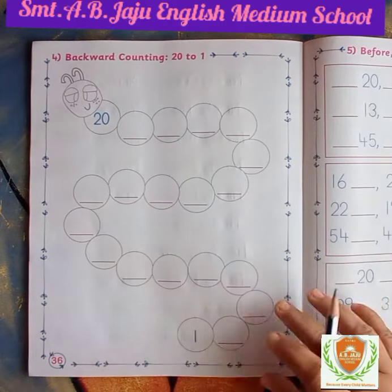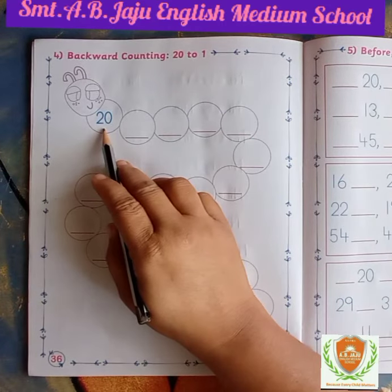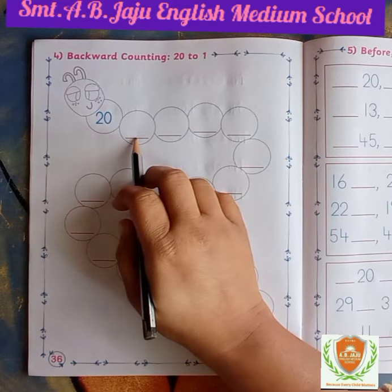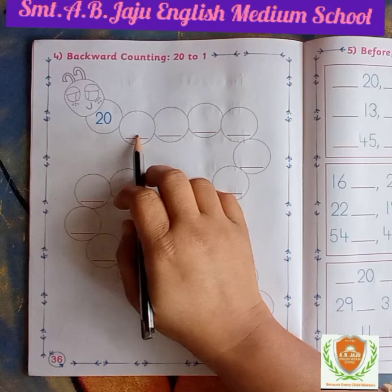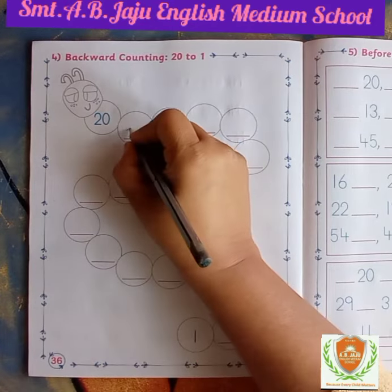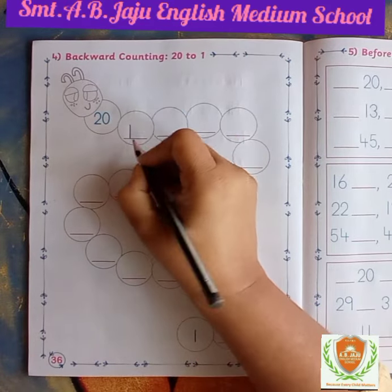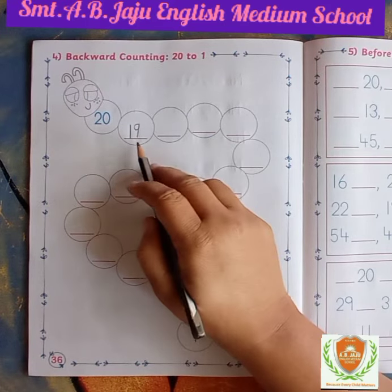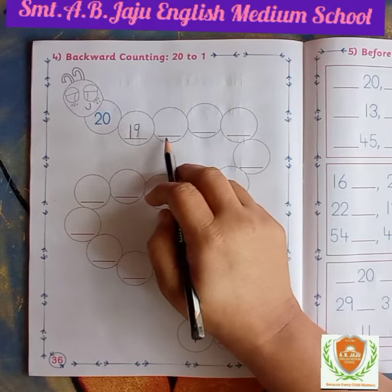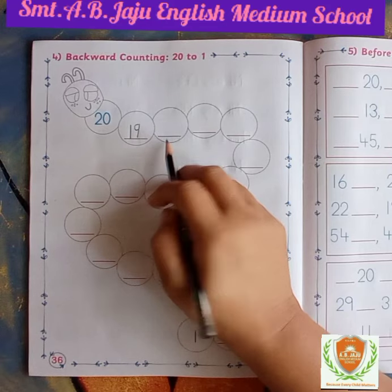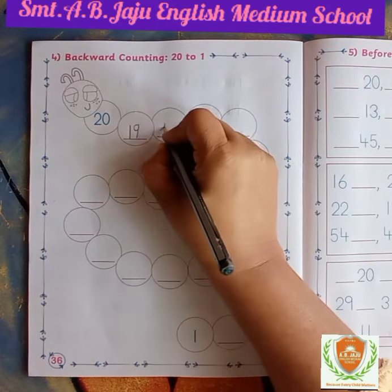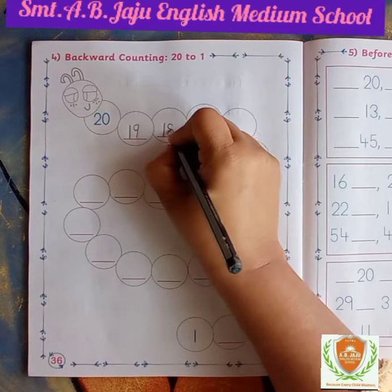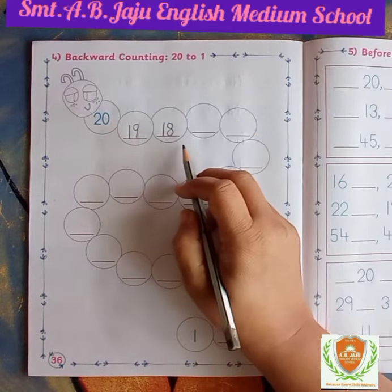Okay students, this is the number 20. In backward, after 20, which number comes? 19. Write down first 1, then write down 9 — that is 19. Now next, after 19 which number will become in backward? 18. Write down first 1, then write down 8 — that is 18.